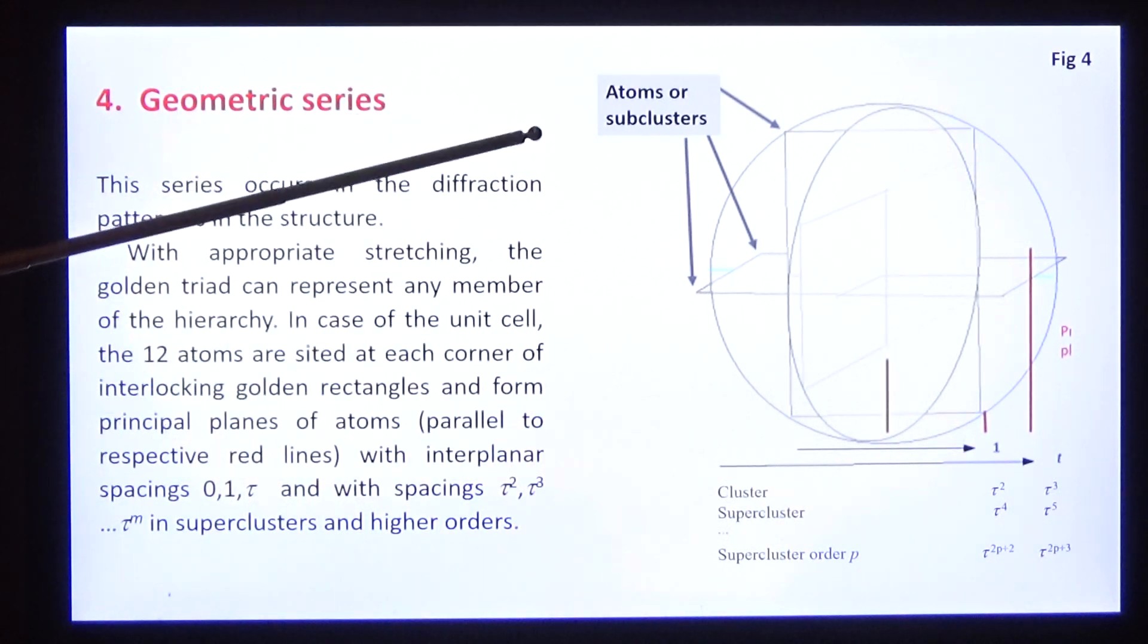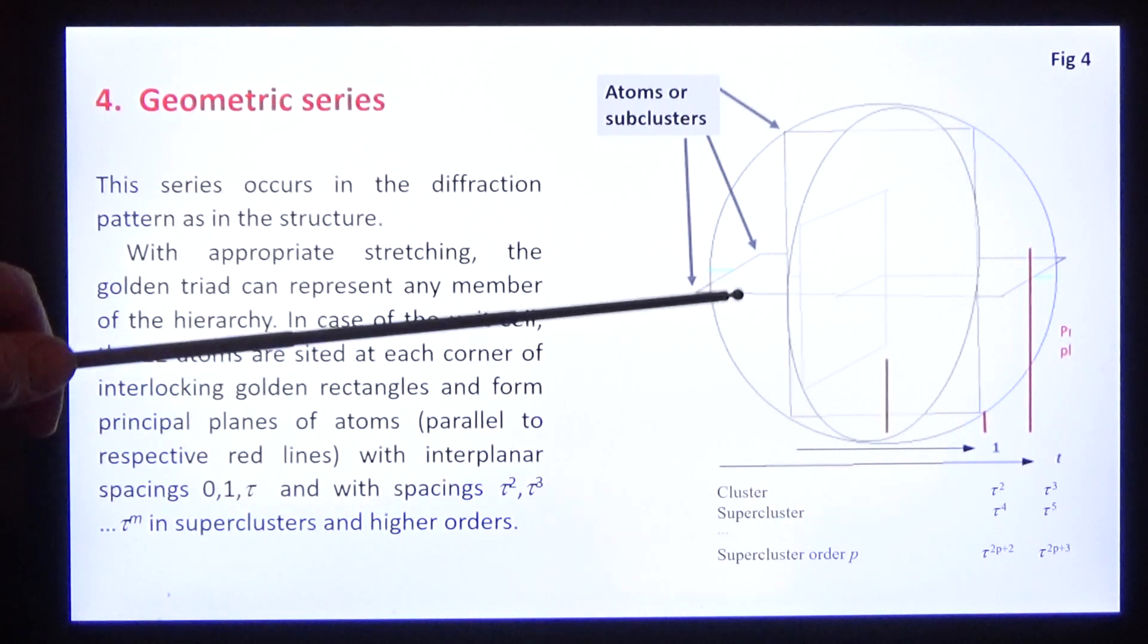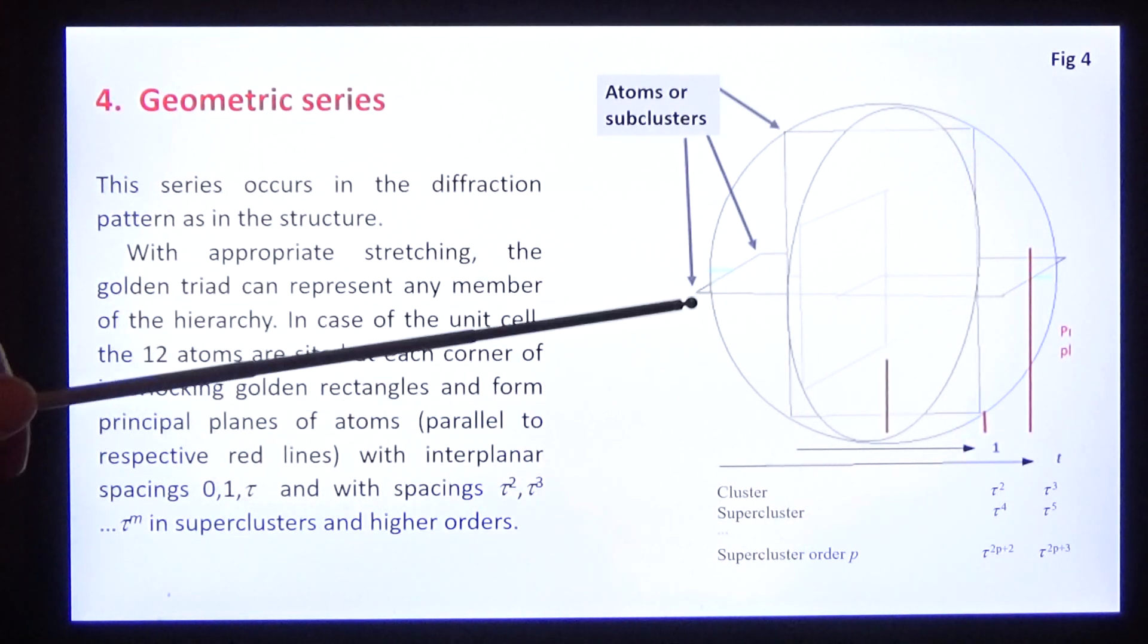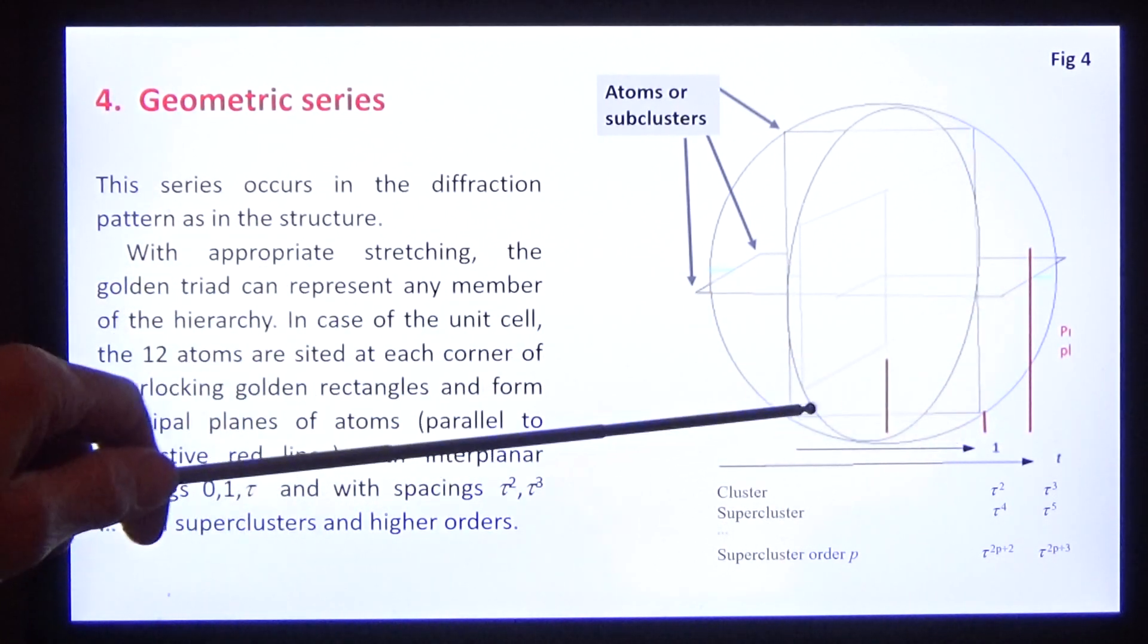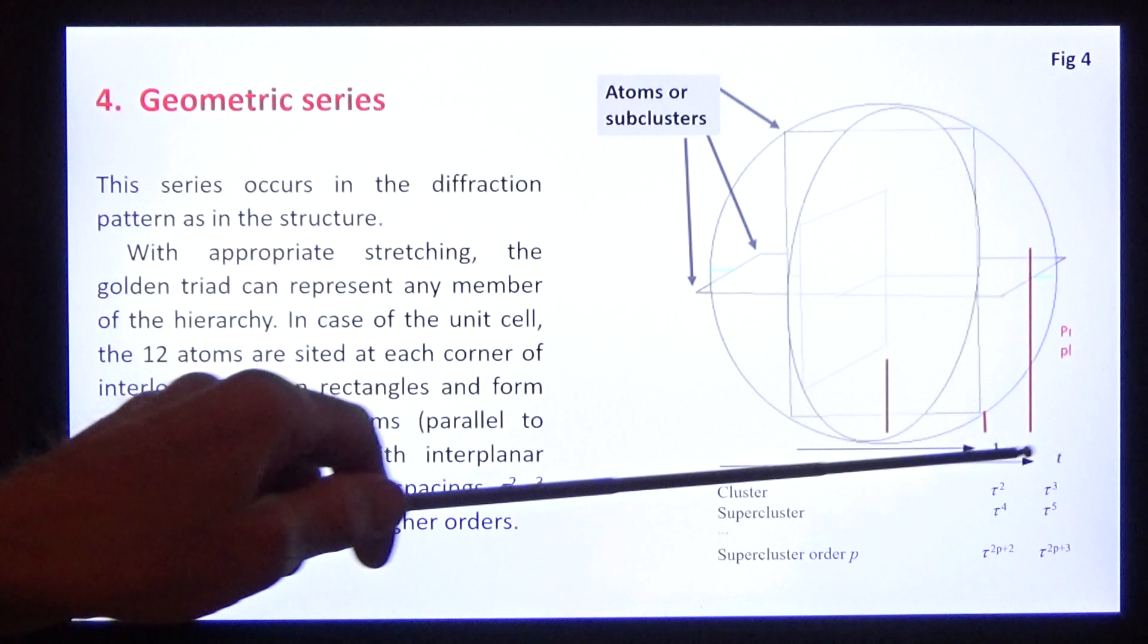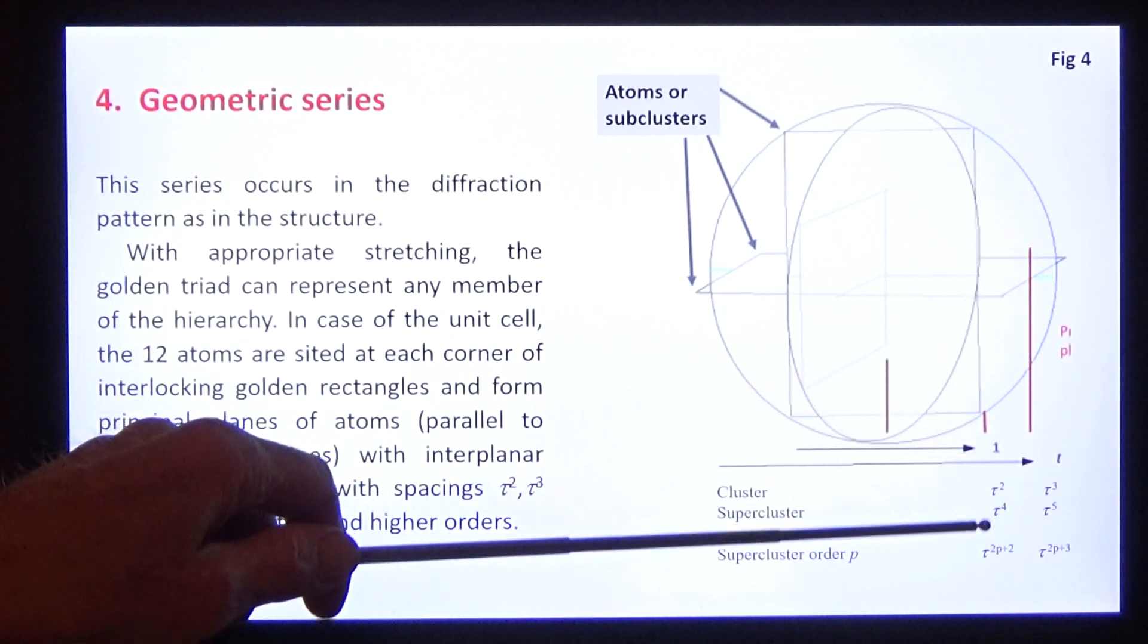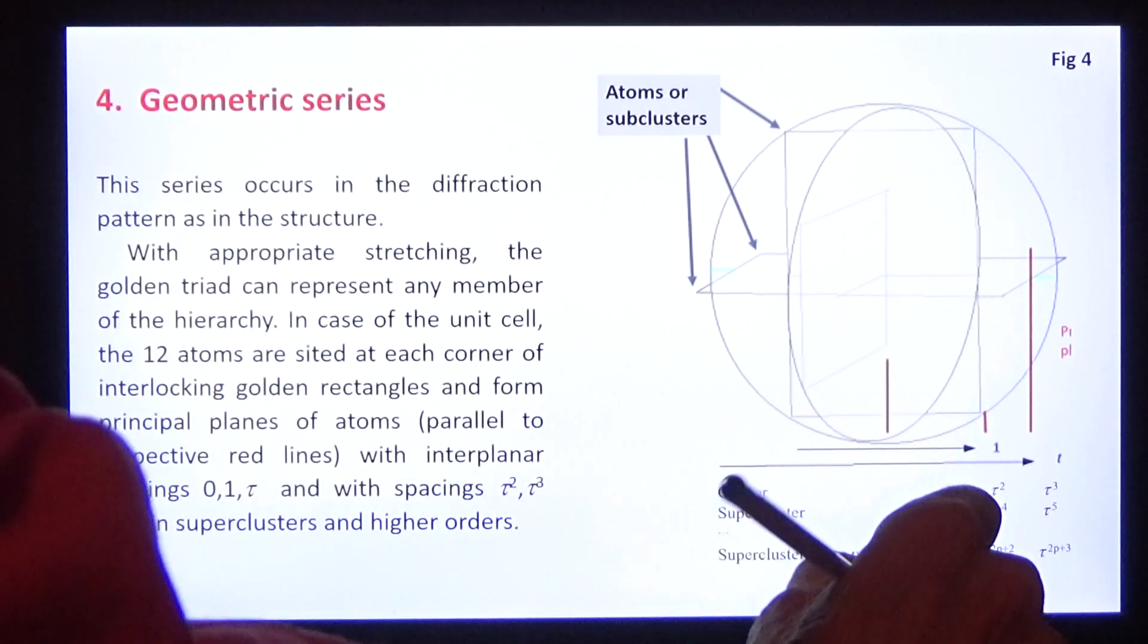The golden triad can represent any member of the hierarchic series. In the unit cell, atom centers are located on all the corners. There are three principal planes with interplanar spacings: 1, tau; in the cluster, tau squared, tau cubed; and in the supercluster, tau to the power four, tau to the power five. You recognize the geometric series.